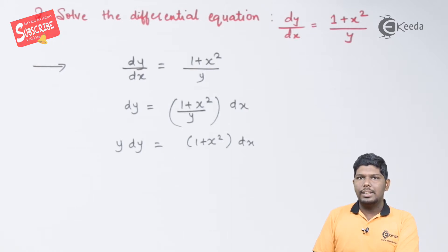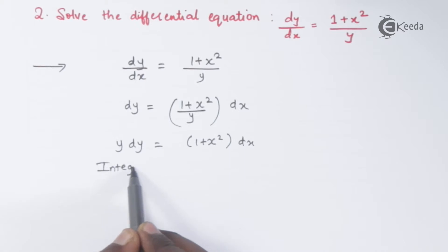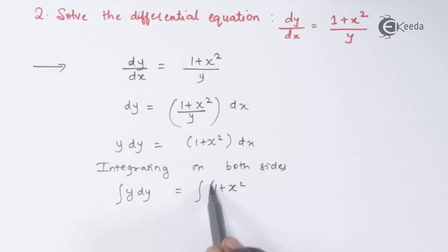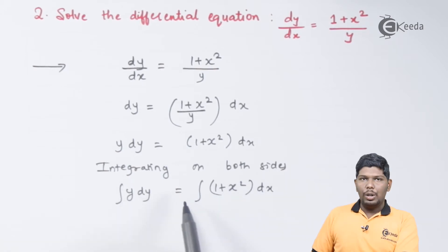The next step will be integrating on both sides. We have integral y dy is equal to integral of 1 plus x square dx.